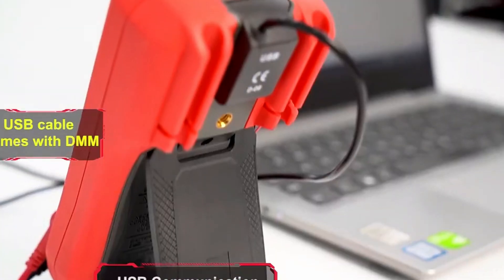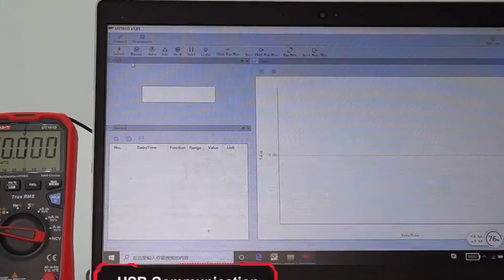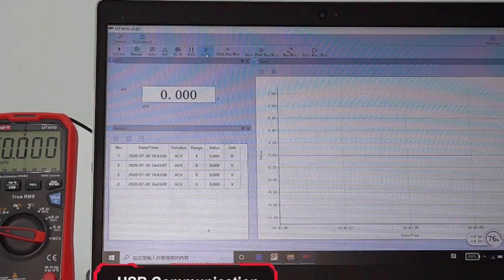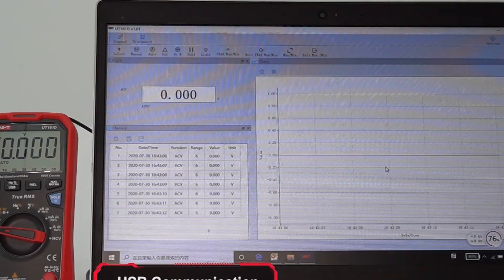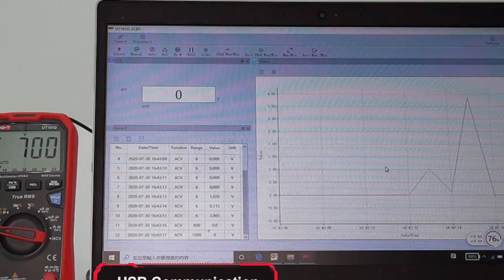The multimeter has a wide measuring range, including resistance from 60 mω to 220 mω, capacitance from 60 mF to 220 mF, frequency from 10 MHz to 220 MHz, voltage up to 1000 V, and current up to 20 A.